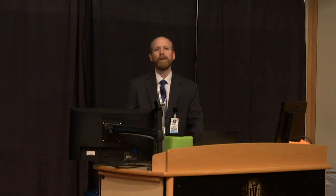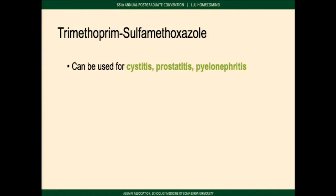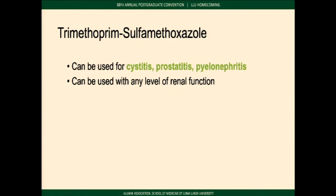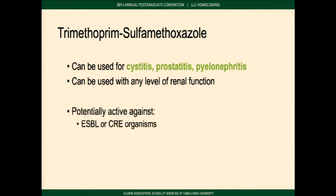Nitrofurantoin is potentially effective against some ESBL organisms, some carbapenem-resistant organisms, E. coli, Klebsiella, and even vancomycin-resistant Enterococcus. If the susceptibility says susceptible, you should trust it. If they have cystitis with a multidrug-resistant organism and good enough kidney function — creatinine clearance above 50 mL/min — there's no reason you can't use this as therapy and avoid IV meropenem or IV daptomycin. Trimethoprim-sulfamethoxazole can be used for all levels of UTI — cystitis, prostatitis, pyelonephritis — and penetrates into the kidneys. Potentially active against ESBL or CRE organisms. Use it only if you have susceptibility data showing it's sensitive.